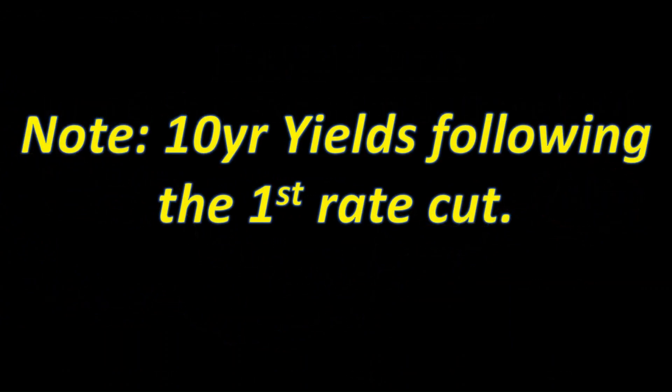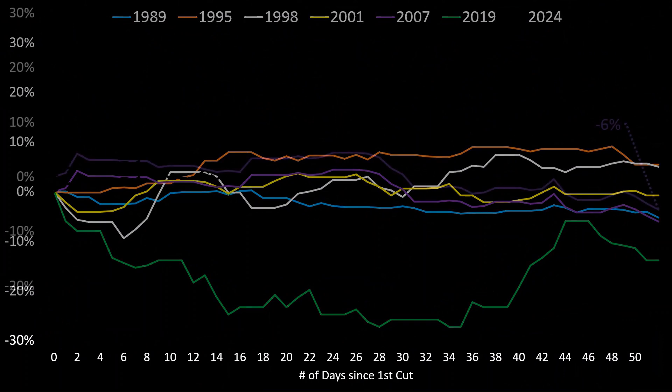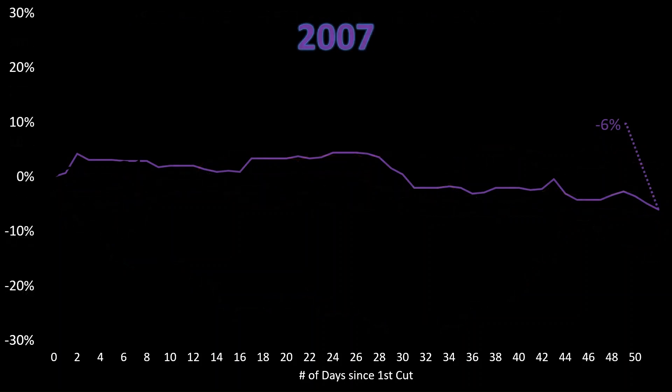Overall, the 10-year yields following the first rate cut send us a message. What we've done is go back in time and look at prior cycles when the Federal Reserve cut rates for the first time, noting how 10-year bond yields acted for the first 50 to 60 days following that first rate cut. The x-axis at the bottom represents the number of days since the first Fed cut.